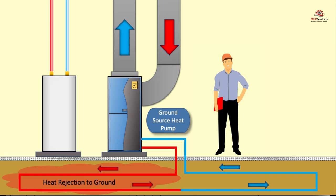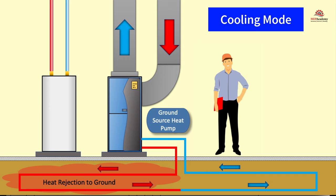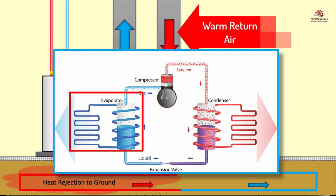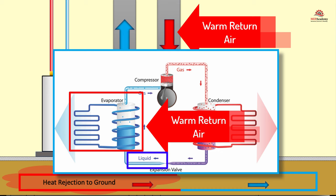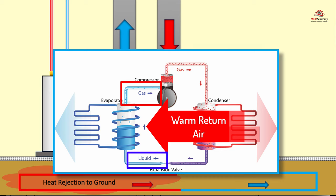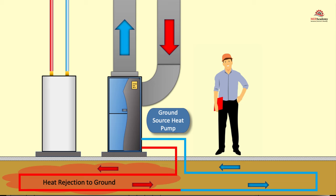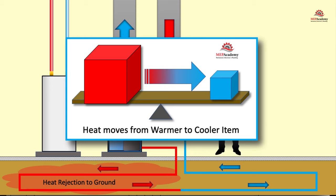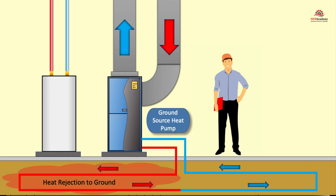In cooling mode, warm air from within the building is brought into the ground source heat pump. The heat pump's indoor coil will absorb the warm air into the cooler liquid refrigerant circulating through the coil. Absorbing the heat will cause the refrigerant to boil and turn into a gas. The refrigerant will circulate through the system and be absorbed by the cooler water circulating through the system from underground. The heat is then absorbed by the water and circulated underground where the heat is rejected to the cooler ground. The second law of thermodynamics states that heat moves from a warmer to a cooler item. The water and refrigerant never come in contact with each other.